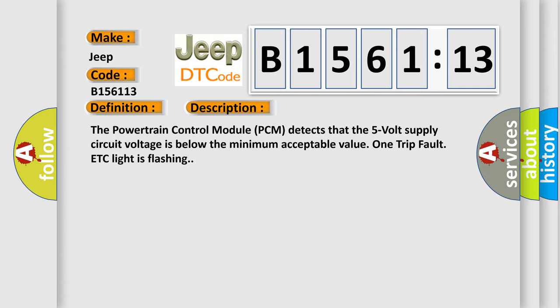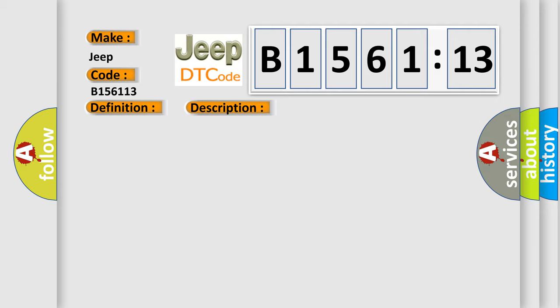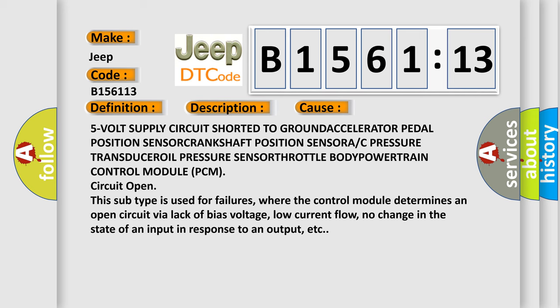Here is a short description of this DTC code. The powertrain control module (PCM) detects that the five volt supply circuit voltage is below the minimum acceptable value — one trip — and the warning light is flashing. This diagnostic error occurs most often in these cases: 5 volt supply circuit shorted to ground, accelerator pedal position sensor, crankshaft position sensor, A or C pressure transducer, oil pressure sensor, throttle body, or powertrain control module (PCM) circuit open. This subtype is used for failures where the control module determines an open circuit via lack of bias voltage, low current flow, or no change in state of an input in response to an output.